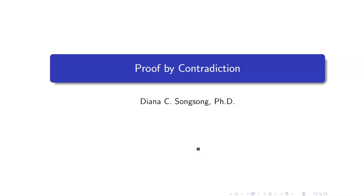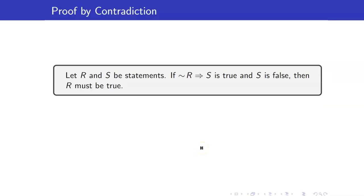In this section, we explore a proof technique that can be applied not only to implications but to other statements as well. We call this technique proof by contradiction. Proof by contradiction is based on the following simple idea: suppose that we have statements R and S, and we know that the implication 'not R implies S' is true. However, we know that the conclusion S is false, then R must be true.